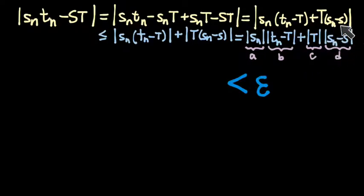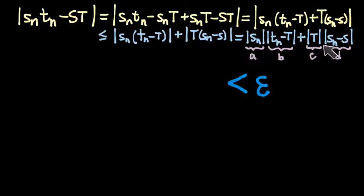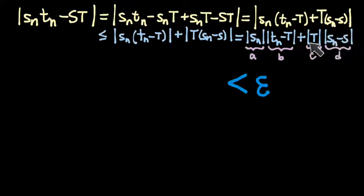How do we know we can control the absolute value of Sn minus S? It's given that the Sn sequence is convergent with limit capital S. Therefore we have control over the distance between Sn and S — we can make it as small as we want. The same is true for TN minus T. We can make that quantity as small as we'd like past a certain capital N in the sequence. So the definition of convergence gives us control over both B and D.